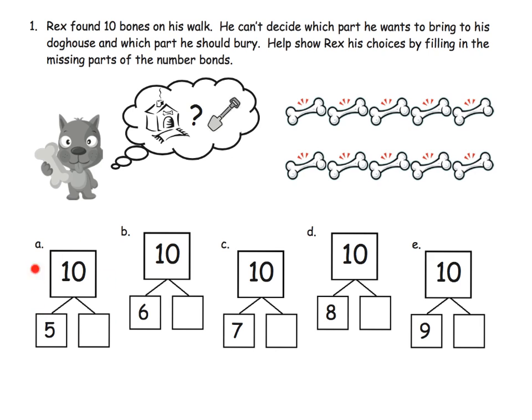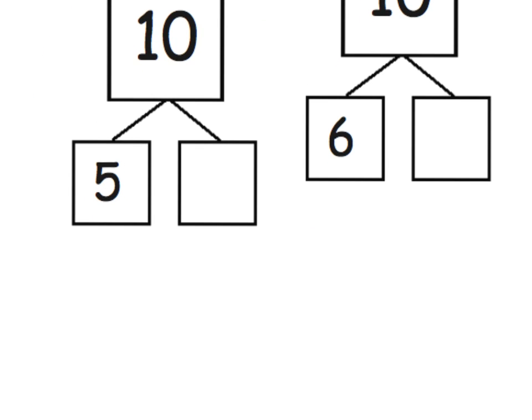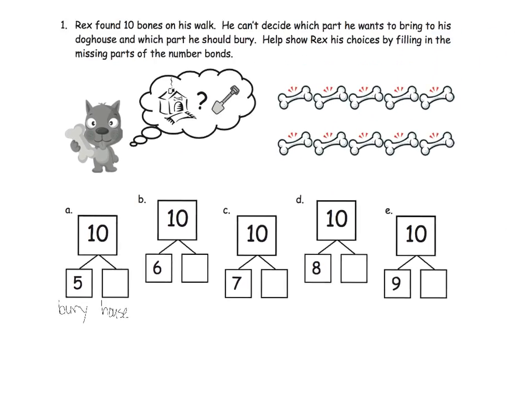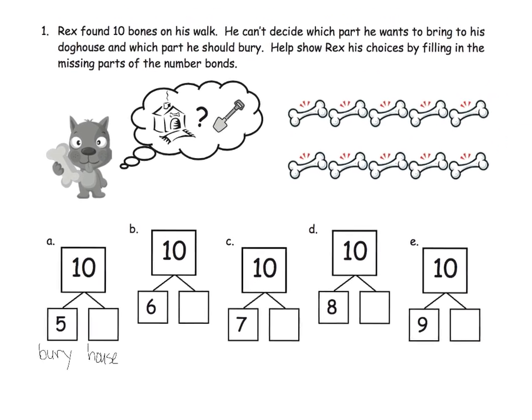So the idea, teachers, would be, you've got an example here. Some of these are burying and some are doghouse, right? So you might want to put in, let's see if I can zoom in, you might want to put in bury and then house, doghouse. And that might help the students remember that, in this case, I just arbitrarily chose the first number to represent burying and the second number to represent house.